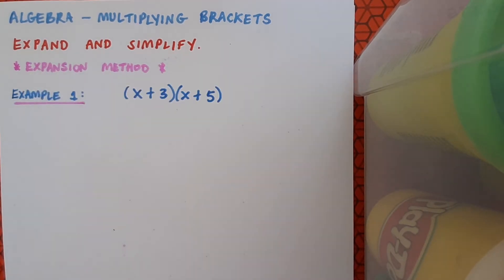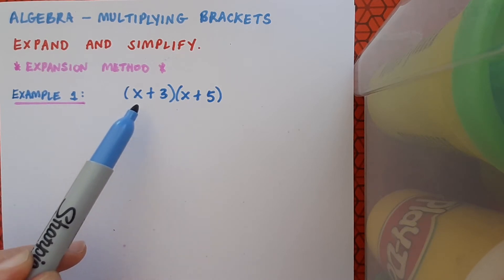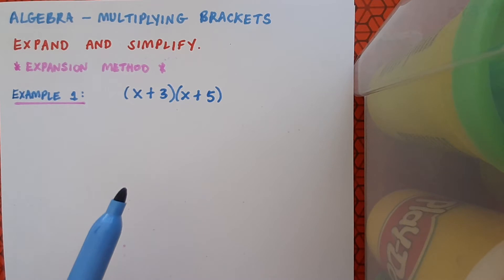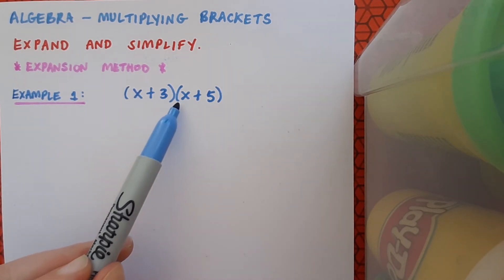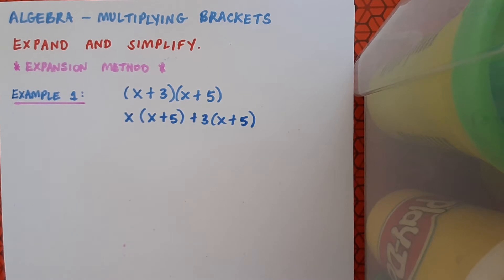Here's my first example. It's x plus 3 by x plus 5. You'll notice that I have a set of brackets around the expression x plus 3, and a set of brackets around the expression x plus 5. Everything in the first bracket must multiply by everything in the second bracket. One way we can represent this is to split up the first bracket and write each term before a copy of the second bracket.